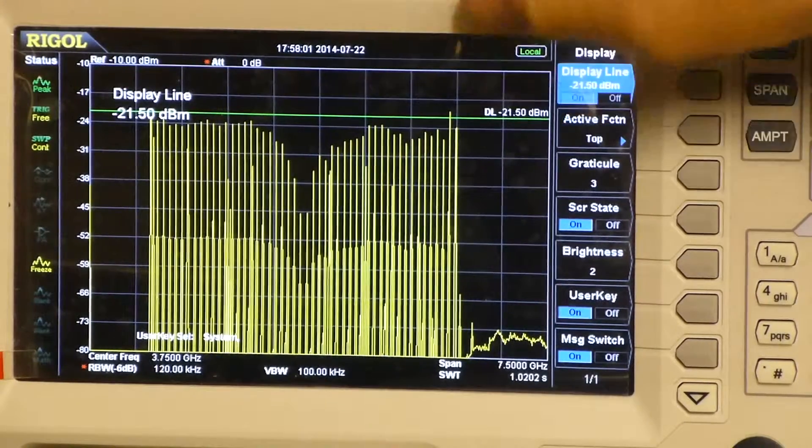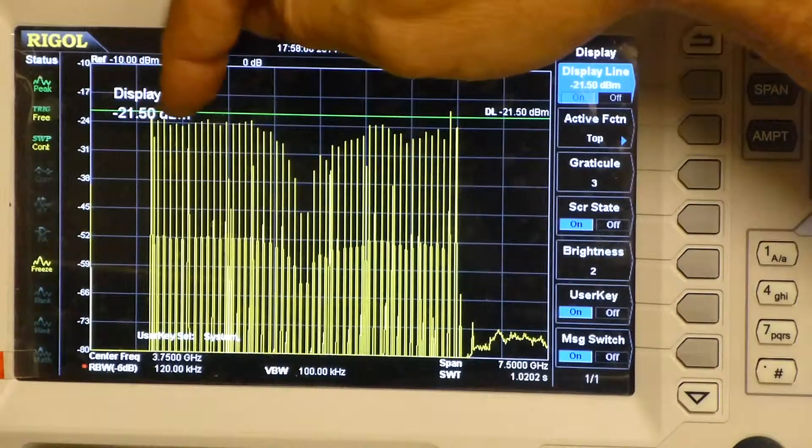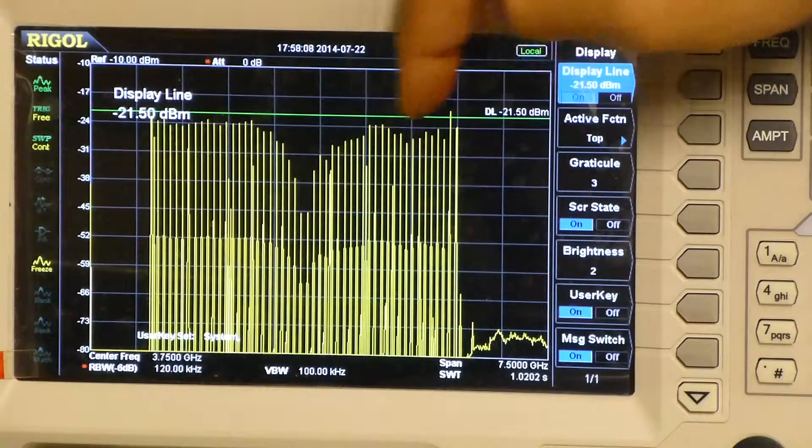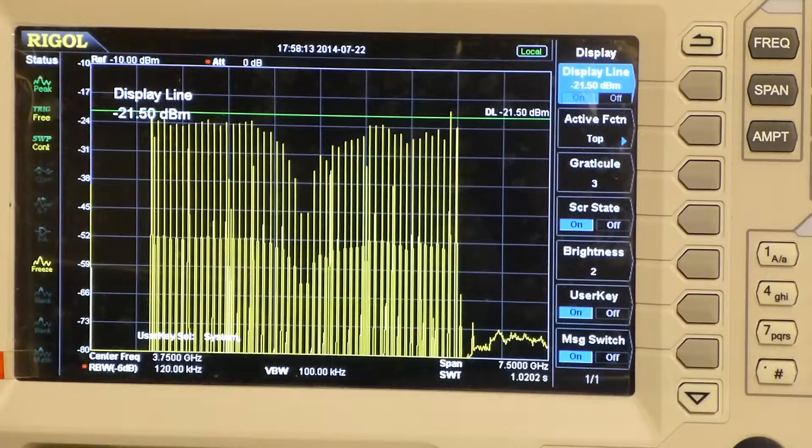More usefully, where you have a standard for EMC to meet, you will normally see a pass-fail line across the screen showing the spectrum profile that you have to meet for your emissions.